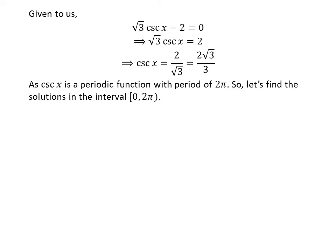As the cosecant function is a periodic function with a period of 2 times pi, let us first find the solutions to the equation cosecant of x is equal to 2 times square root of 3 upon 3 in the interval 0 to 2 times pi.